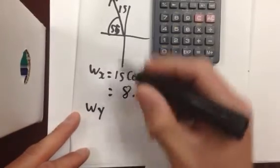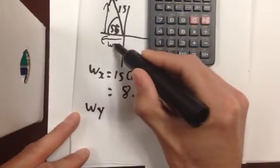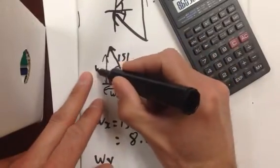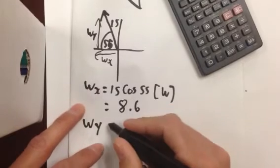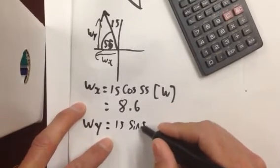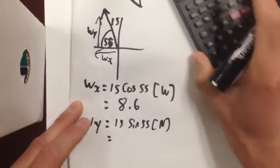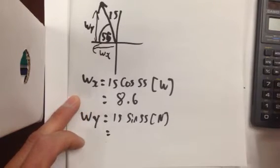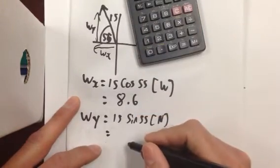Wy, that's the vertical component. See this is wx. And up here we have wy. Wy, our vertical component, is 15 sin 55. And that's going to be north. And that's 12.29.